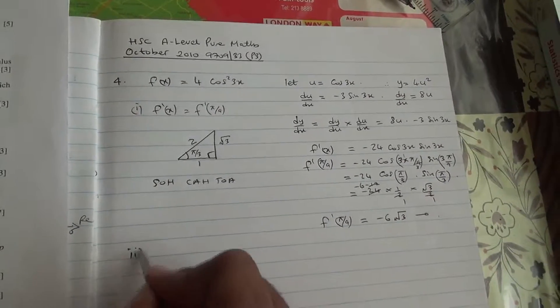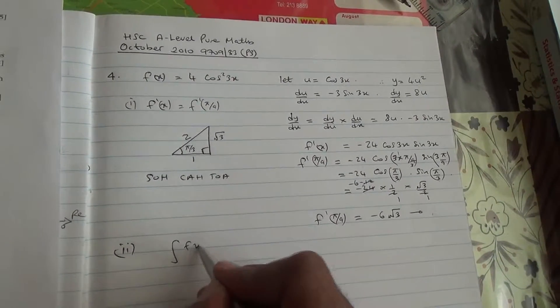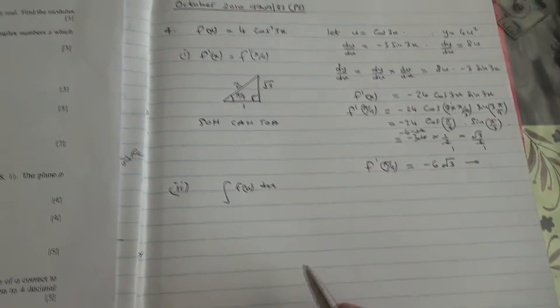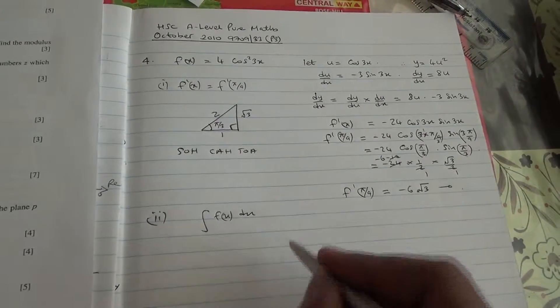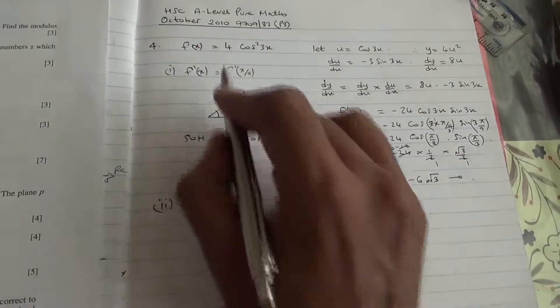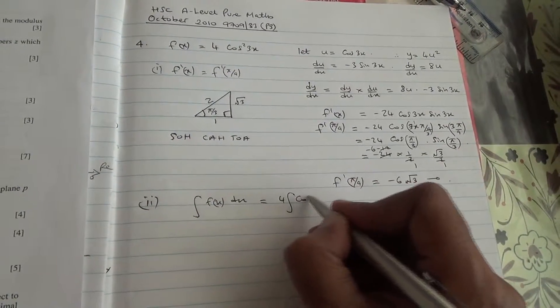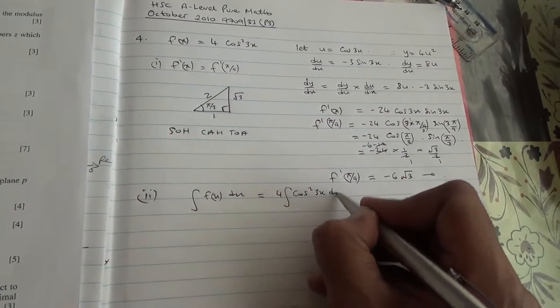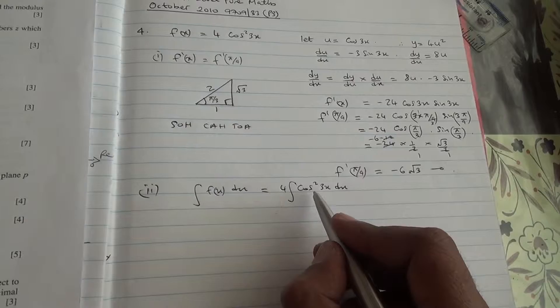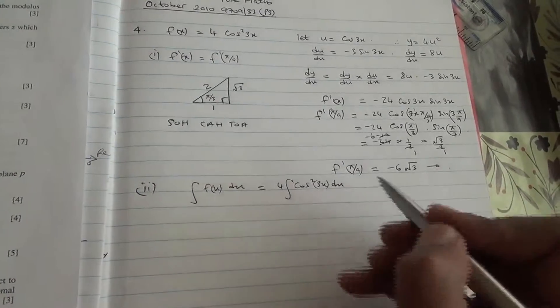Now, moving on to the second part, we need to integrate f(x) dx. So how are we going to do this one? Integrating f(x) dx is not a big deal, however. We can put the 4 outside because it is a constant. So we're going to say 4 integral of cos squared 3x dx. Now, how are we going to proceed with this one? Integrating cos squared 3x, the angle is 3x, be careful.